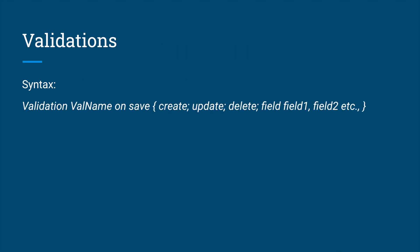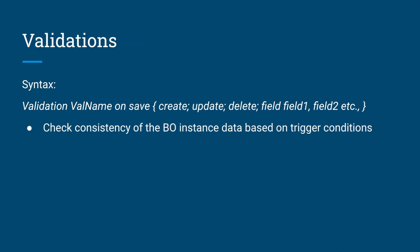Hello everyone, welcome back to my YouTube channel. We are discussing the RESTful RAP programming model. In this video we are going to talk about validations. The validation syntax is very specific — it starts with the validation name, on-save, and trigger conditions. This has to be defined in the business behavior definition, also called the business object behavior definition. It helps us check whether our data is in a consistent state or not.